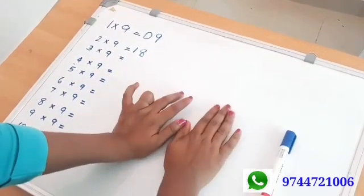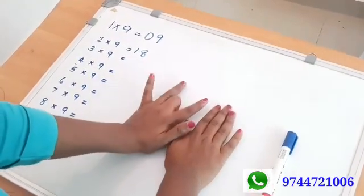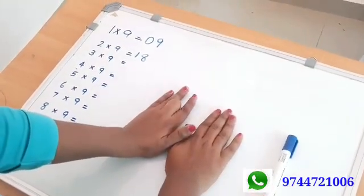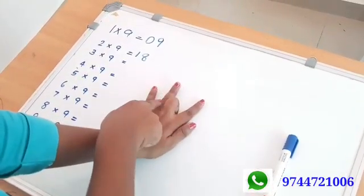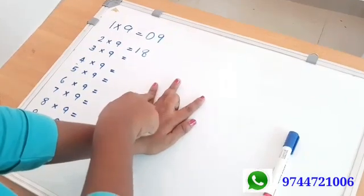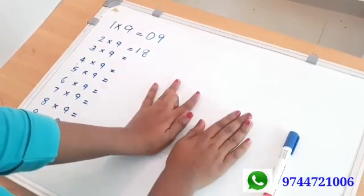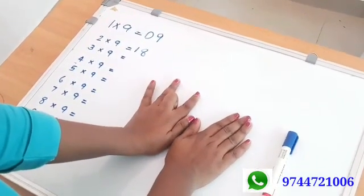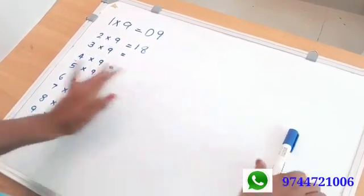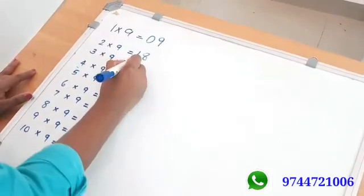Now we fold 3 fingers. On the left side we have 2 fingers, and on the right side we have 7 fingers. So three nines are 27.